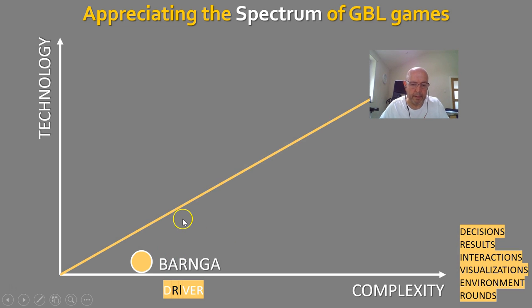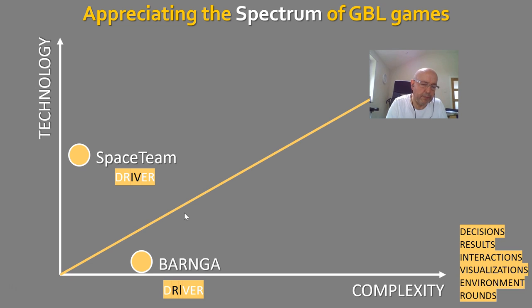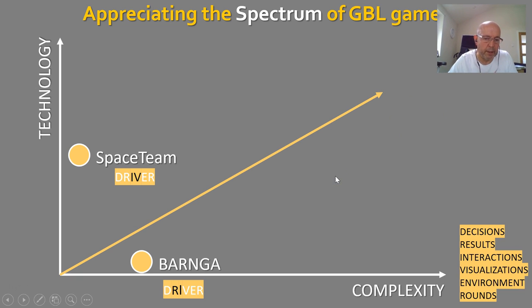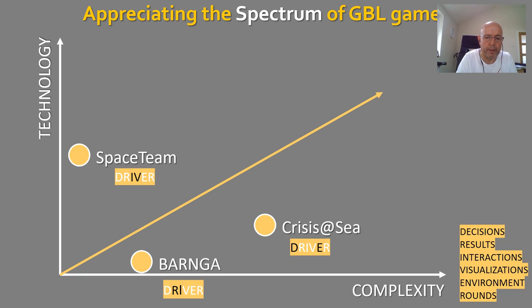Another game on a different side of the axis is very simple but high-tech: Spaceteam. Spaceteam is what they call a collaborative shouting game played on mobile phones. You're all collectively piloting a spacecraft that's falling to bits, and different people have different problems flashed up on their phones which they have to tell other people to fix. It's great fun and great for an icebreaker, sitting at the technology-simple, complexity-simple end of the spectrum.